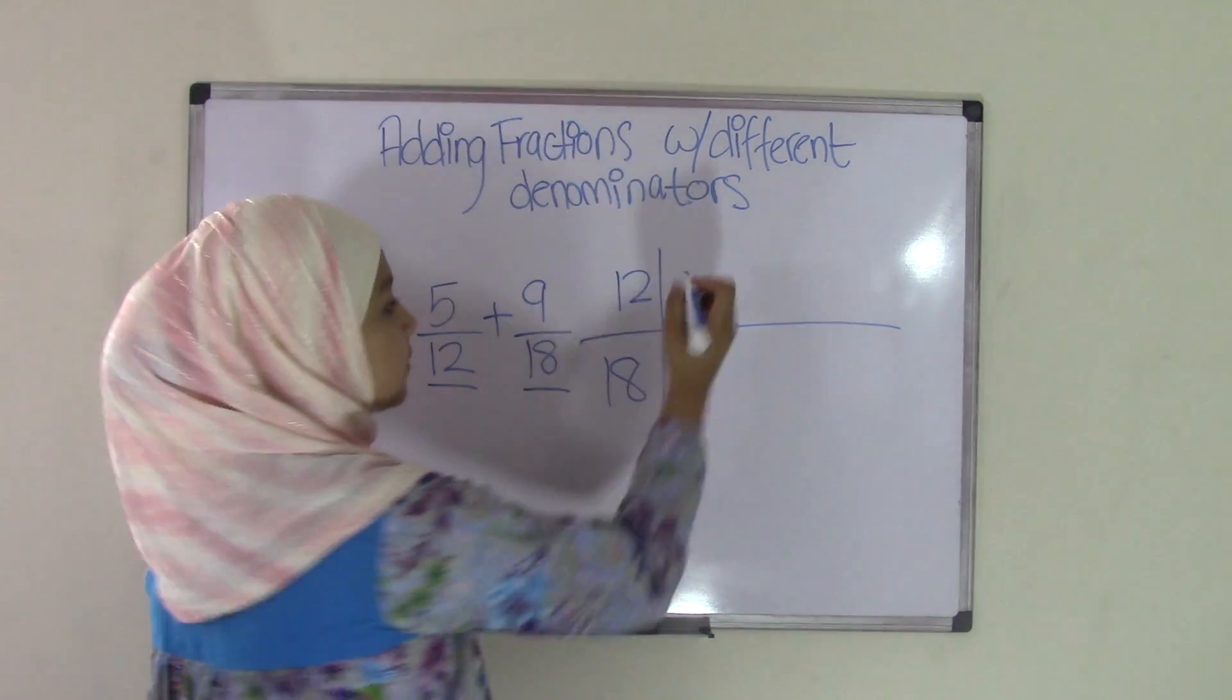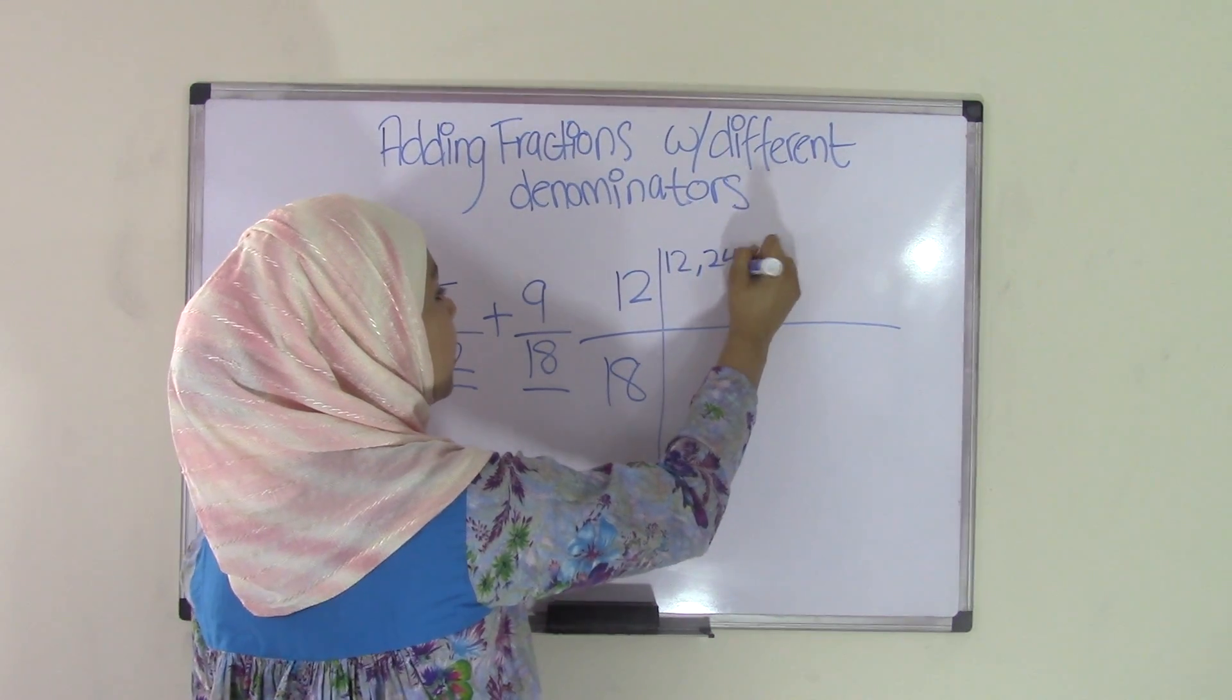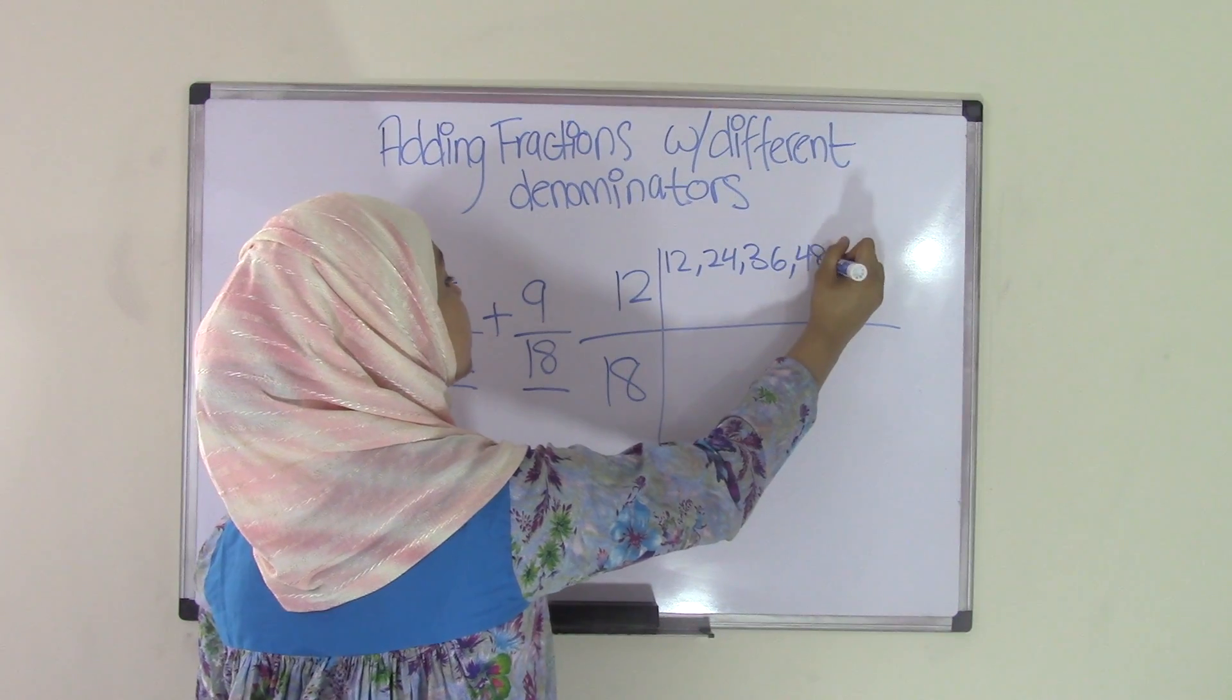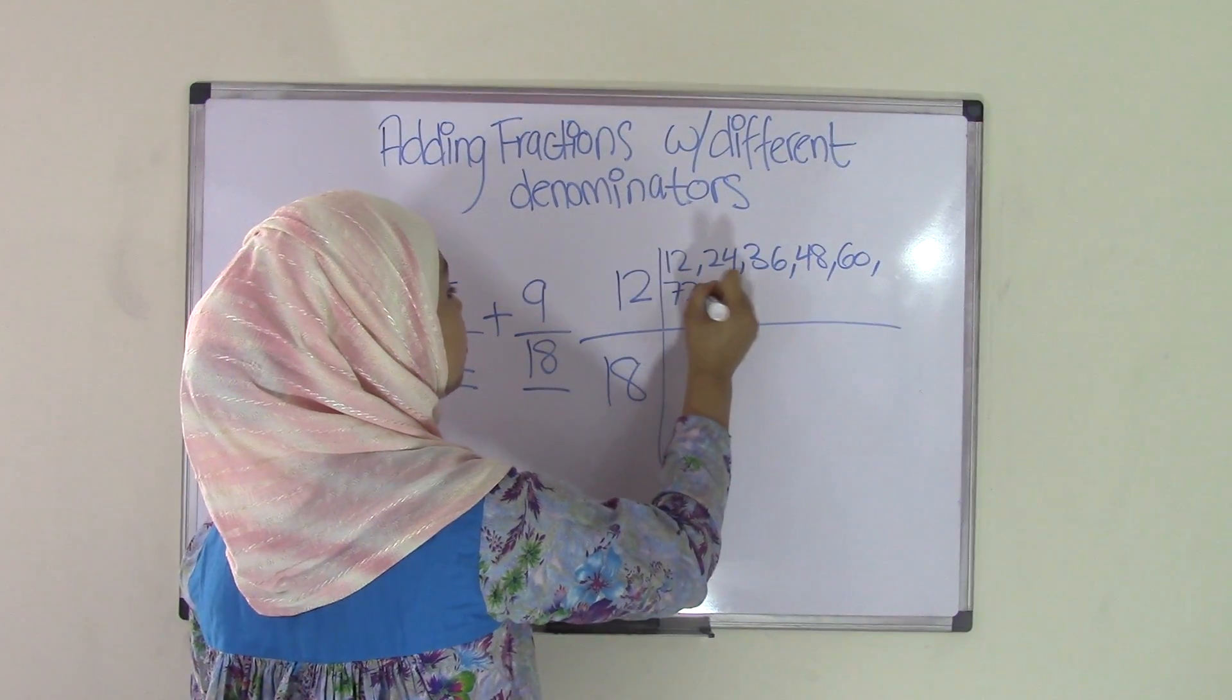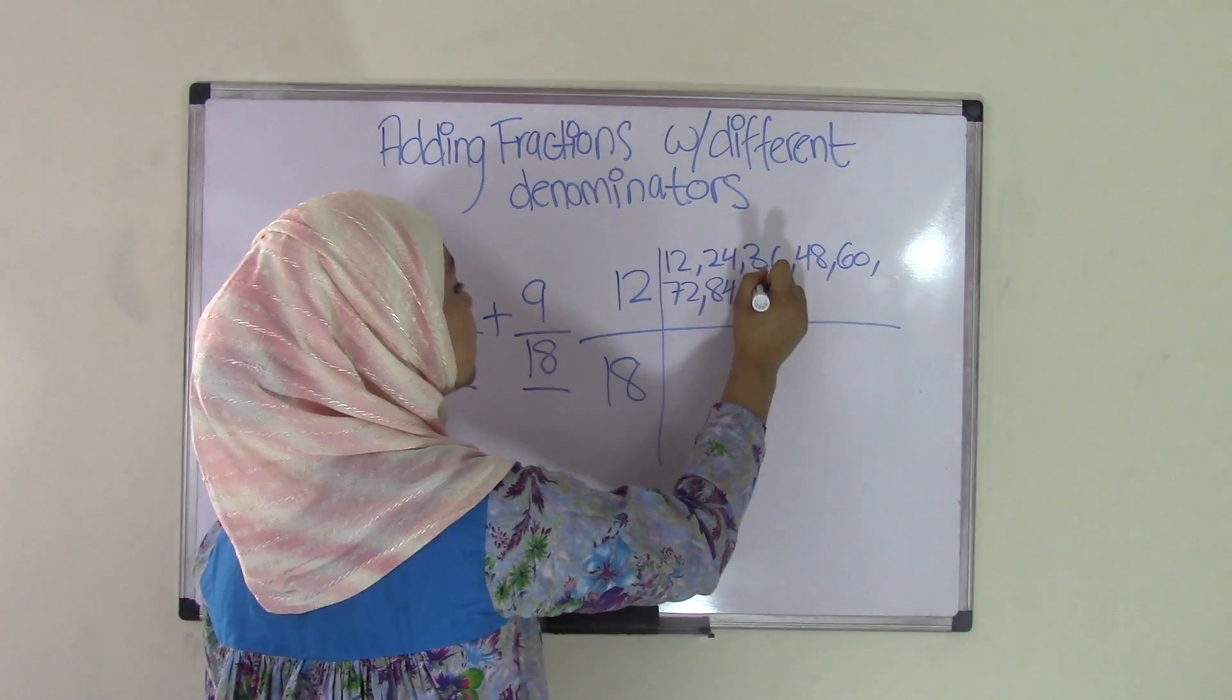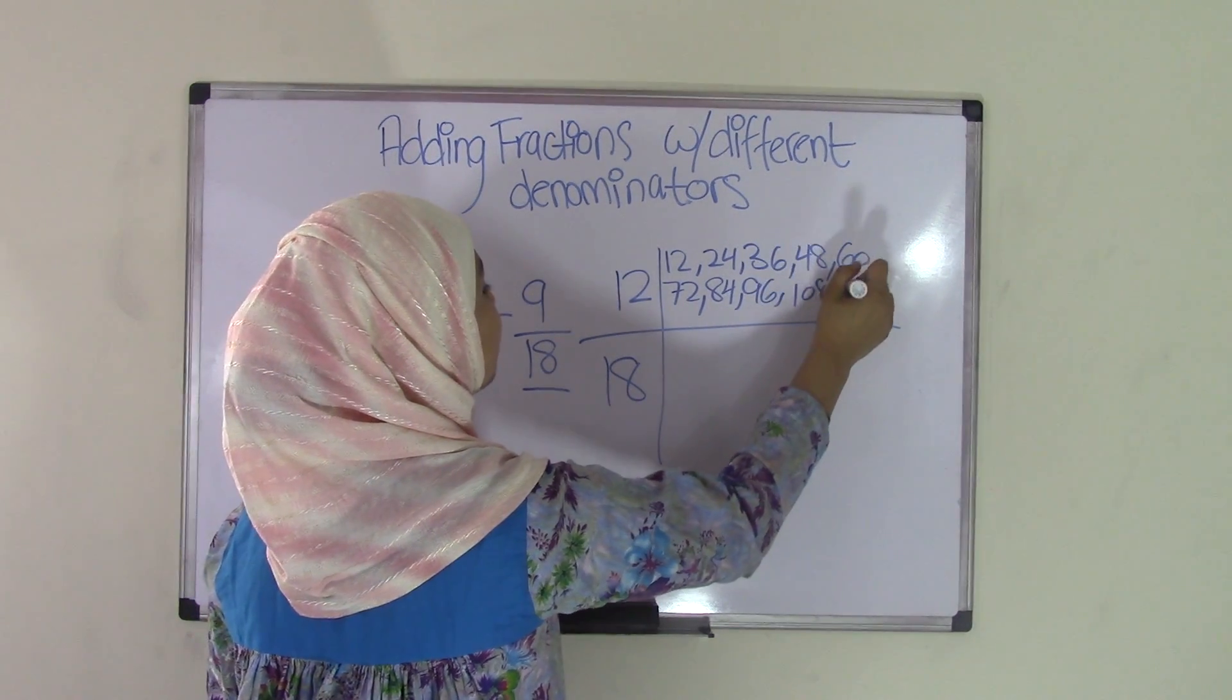So let's start out with 12. So 12 times 1 is 12, 12 times 2 is 24, 12 times 3 is 36, times 4 is 48, times 5 is 60, times 6 is 72, times 7 is 84, times 8 is 96, times 9 is 108, and times 10 is 120.